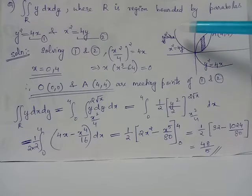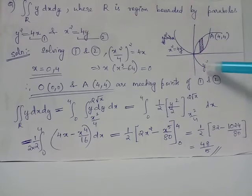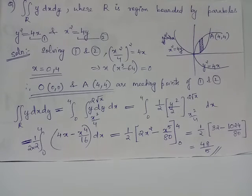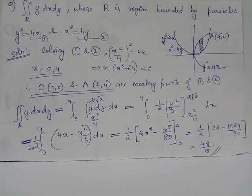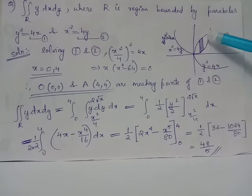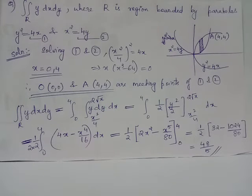We have x squared equals 4y is this parabola and y squared equals 4x is this parabola. This is the region over which we have to carry out the integration. This is the region which is bounded by both these parabolas.